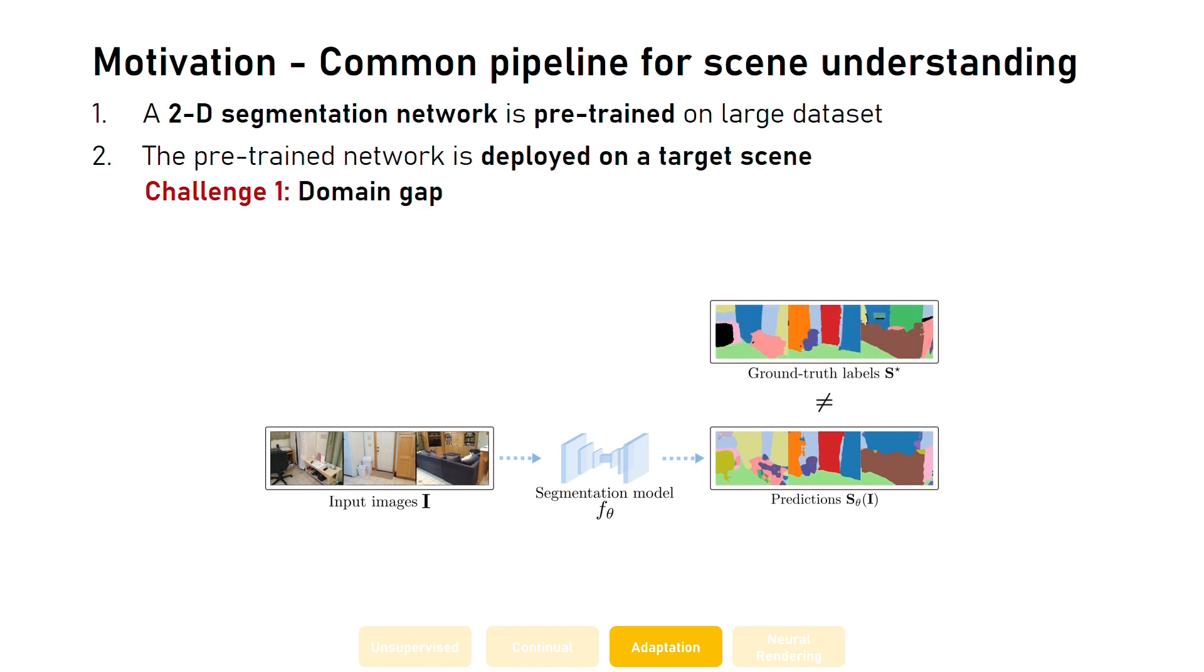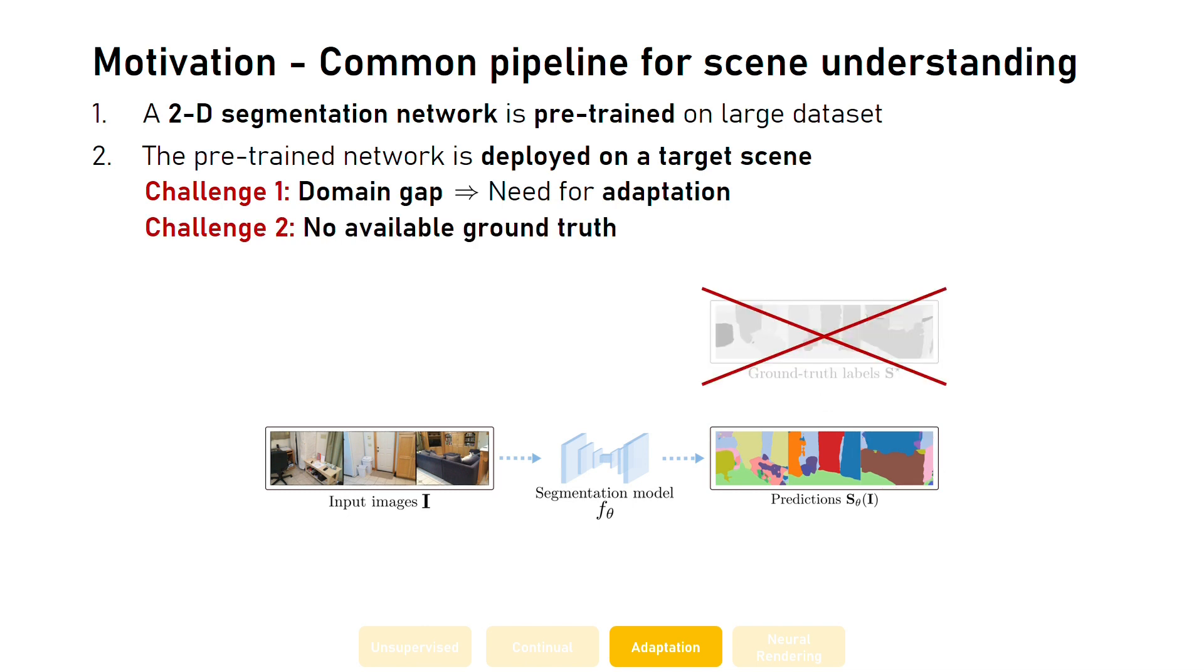First, due to the domain gap with the pre-training dataset, the predictions of the network on the target scene might fail to correctly approximate the ground truth labels. This prompts the need for an adaptation of the segmentation model to improve its performance on the target scene. Second, for this adaptation, ground truth labels are often not available, which therefore forces the adaptation process to be unsupervised.